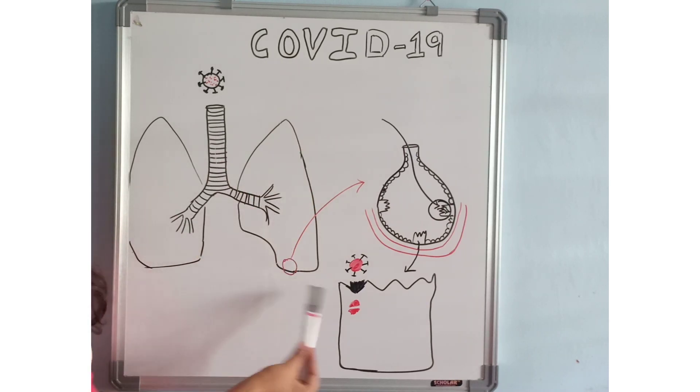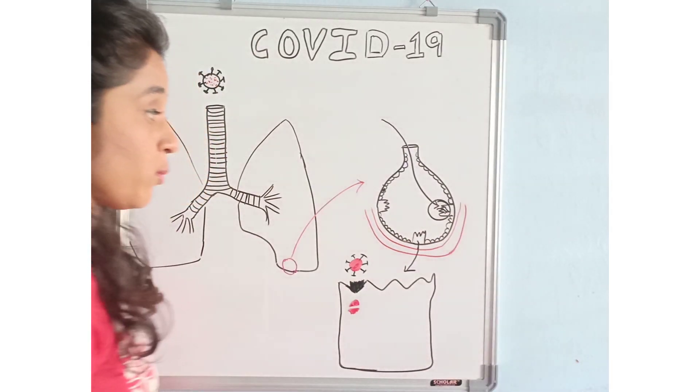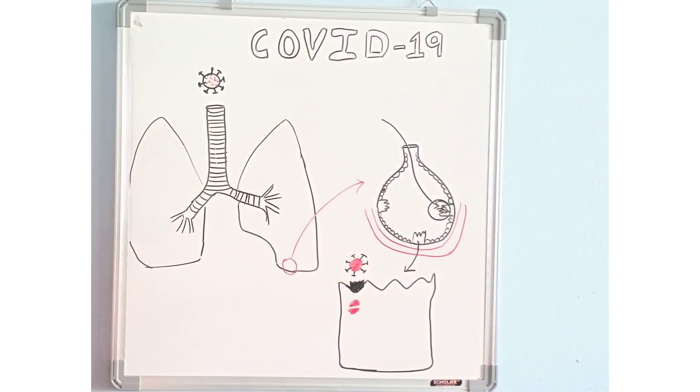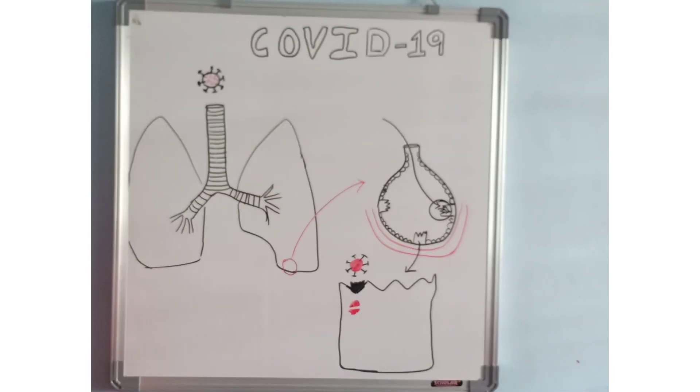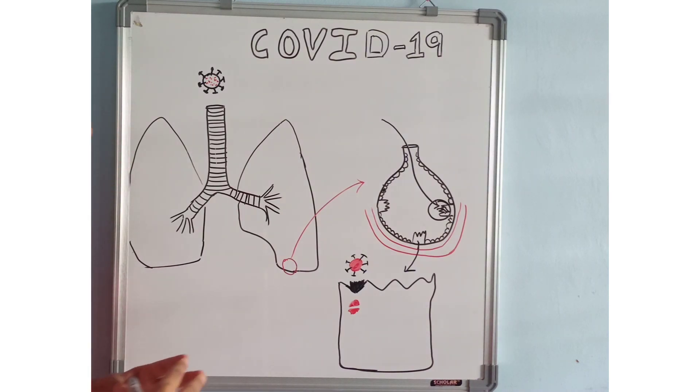Once the coronavirus enters the lungs and reaches the alveoli, it attaches to the type 2 pneumocytes. Type 1 pneumocytes help in gas exchange, and type 2 pneumocytes produce an important substance called surfactant, which is very important in maintaining the surface tension of the alveoli.